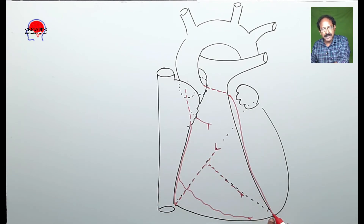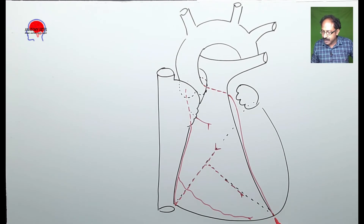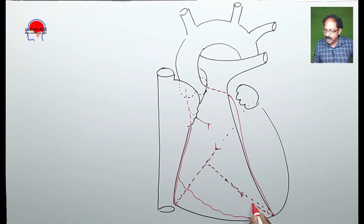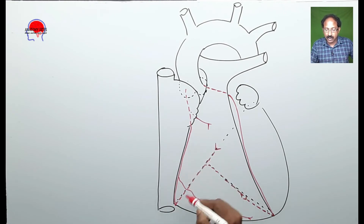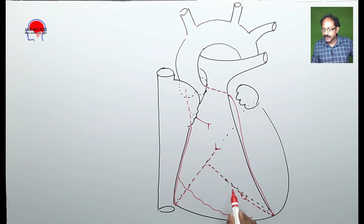The anterior interventricular artery reaches close to the apex of the heart near the inferior border. From there it turns to the posterior interventricular groove — we draw that part as a dotted line. Remember that the posterior interventricular artery is a branch of the right coronary artery, and the two anastomose in the lower part of the posterior interventricular groove.